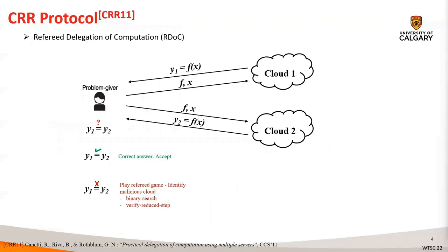I will briefly talk about the CRR protocol of Kennedy et al. that introduces the referred delegation of computation model. A referred delegation of computation for a function f is a protocol between a problem giver and N, where N is greater than or equal to two cloud servers, where at least one of the servers is assumed to be honest. The problem giver delegates the computation and the input to the clouds. Each cloud computes an output Y and returns it to the problem giver. If the results are the same, then the result is considered as correct by the assumption that one of the clouds is honest.